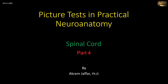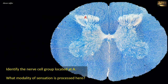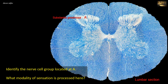Now I will deal with this spinal cord. Identify the nerve cell group located at A. What modality of sensation is processed here? The cell group caps the dorsal horn. It is found throughout the length of the cord but is particularly prominent in the lumbar and sacral levels. This is a lumbar level and the cell group is the substantia gelatinosa of Rolando.